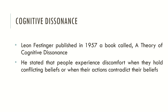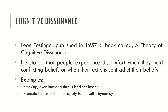Some examples that Festinger gave in his book: for instance, smoking even knowing that it is bad for health, or individuals may promote some behavior but not apply it to oneself — this is also called hypocrisy. Another example may be a person who defends animal rights but continues to eat meat in their meals. This is also called the meat paradox.